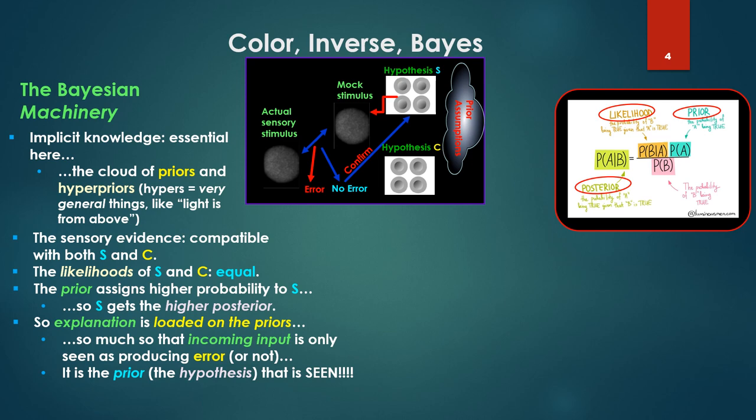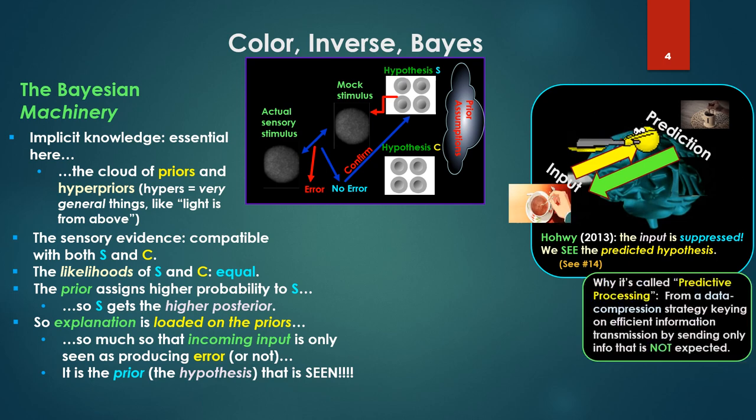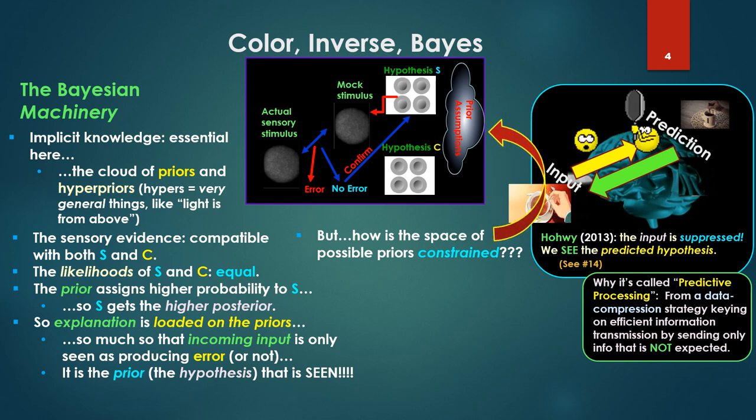Again back to Bayes' formula. So explanation, the power of explanation is loaded on the priors, so much so that incoming input is only seen as producing error or not. And if you saw number 14 where we discussed predictive processing, the information is actually suppressed in favor of the predicted hypothesis. In fact, if there's a nice perfect match, we see the predicted hypothesis somehow. Now predictive processing, why it's called that, it's actually from a computer framework, data compression strategy, which keys on efficient information transmission by sending only information that is not expected.